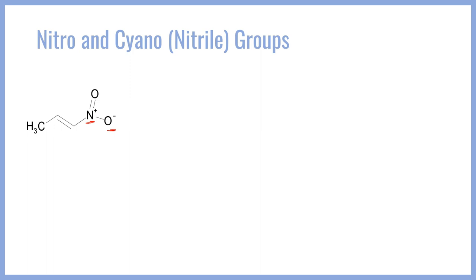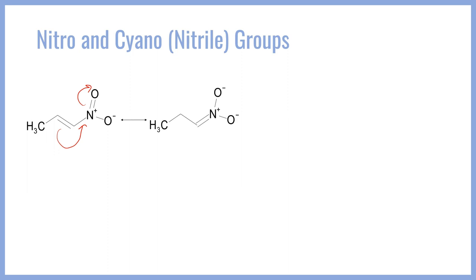Now, how does this work as an electron withdrawing group? If we look at this, we see that we have a double bond here that is adjacent to a double bonded hetero atom — they are conjugated with one another. What we can do is take this pi bond and move it into a double bond with that positive nitrogen, and then kick up this bond onto the oxygen. That is going to give us the following resonance structure, where now this oxygen is formally negatively charged.